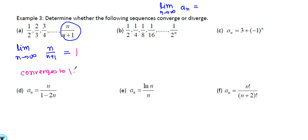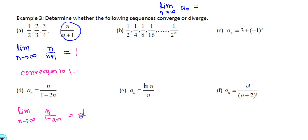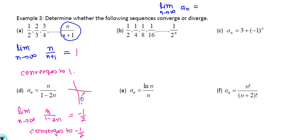The next example: lim as n→∞ of n/(−2n). We still have to write the limit statement formally. The degrees are the same, so this converges to −1/2. We can say this sequence converges to −1/2. If we plot those points, they will be bounded by −1/2.